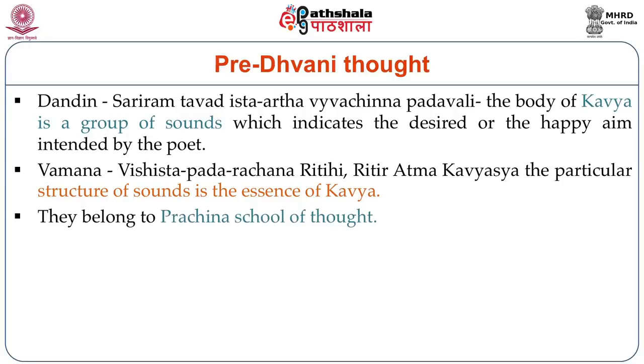These Alankarikas are called the Prachina school of thought. Bhamaha belongs to the Alankara school, Dandi belongs to the Guna school, and Vamana belongs to the Riti school.